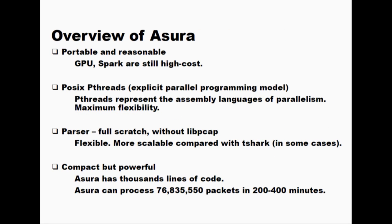Astra has four features. At first, Astra should be run on commodity workstations and laptops. It can run with reasonable computing resources, because GPU and clustering systems such as Spark are still expensive, high cost, and sometimes buggy. And more importantly, Astra uses POSIX pthreads, which is a really old programming style. When writing a program, choosing the appropriate level of abstraction is really important.